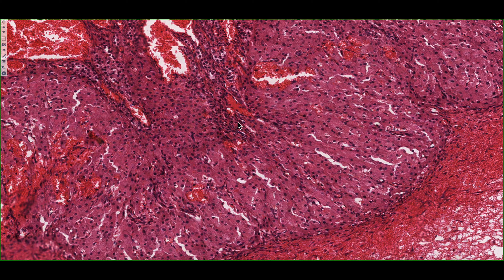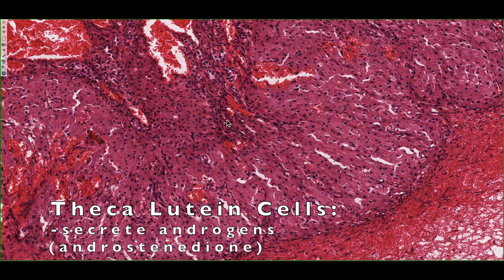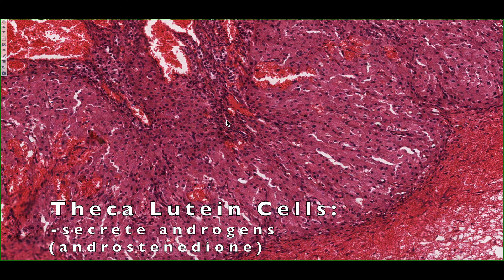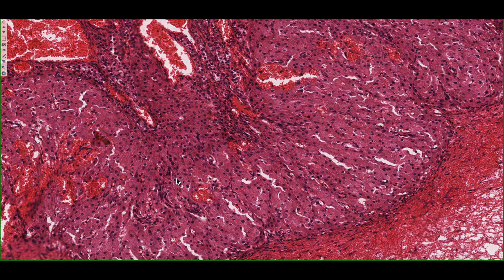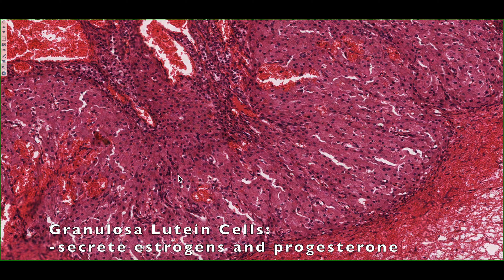Similar to the theca interna cells, the theca lutein cells are going to secrete androgens, in particular androstenedione, which are going to be converted into estrogens by the enzyme aromatase found in the granulosa lutein cells. In addition, the granulosa lutein cells are also going to be secreting the hormone progesterone — so they are secreting not only estrogen but also progesterone.